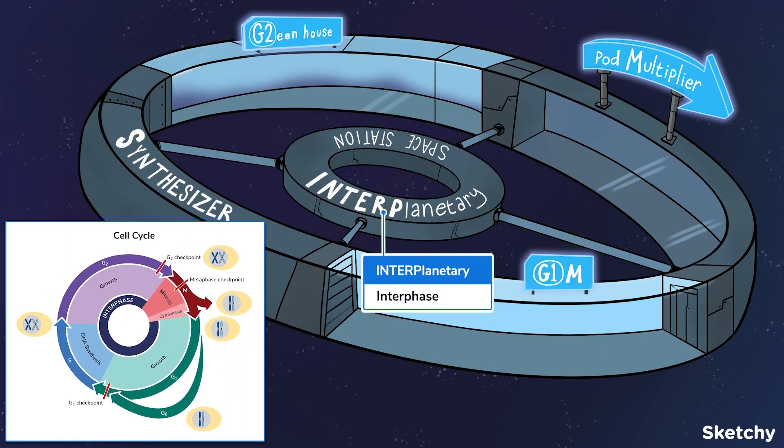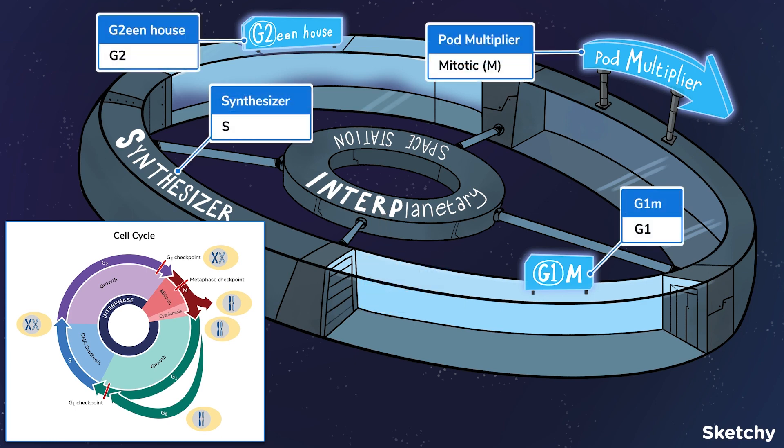And this interplanetary space station is fully equipped with a brand spanking new gym, a factory for synthesizing new information, a greenhouse, and of course, a pod multiplier. Because no space station is complete without a pod multiplier.